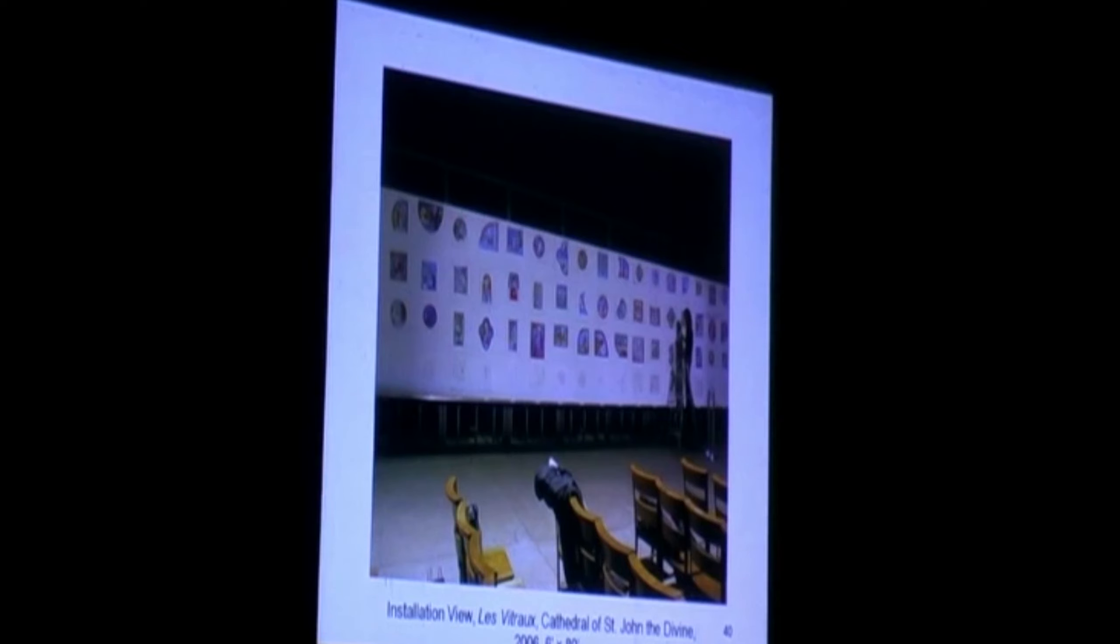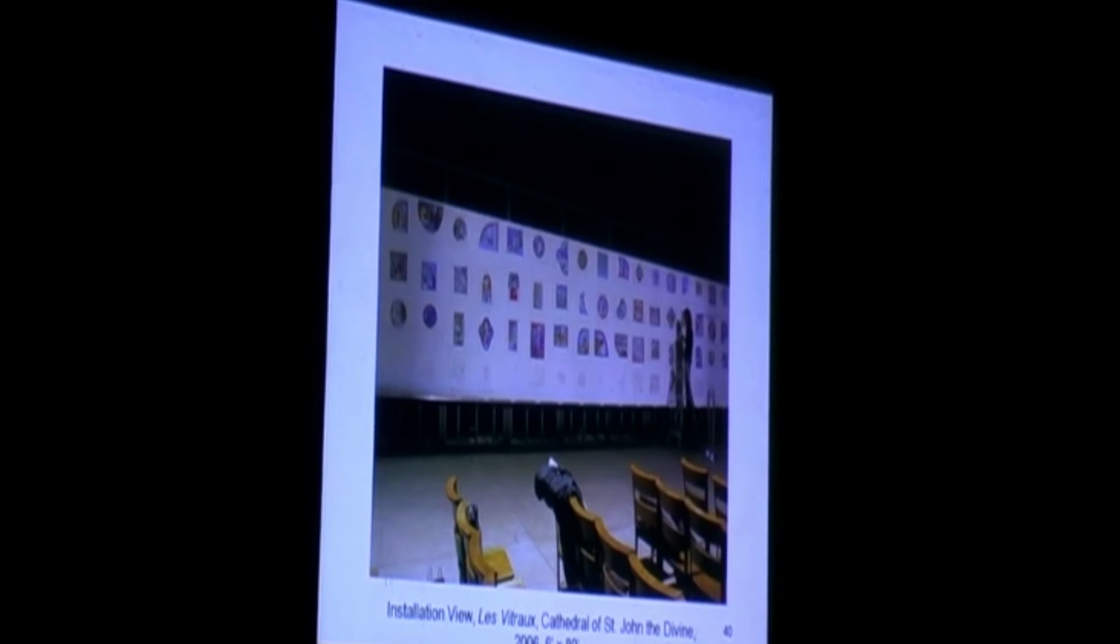And this is an installation shot from the Cathedral of St. John the Divine, where 80 of the vitro paintings were shown in 2006. I would spend the day at the cathedral drawing the scenes that interested me and writing down the colors. Then when I got back to the apartment where I was staying in Paris, I would paint the gouaches from the drawings and colored notations I just made. Bourges has windows lower than those of other cathedrals, so they were easier to see.